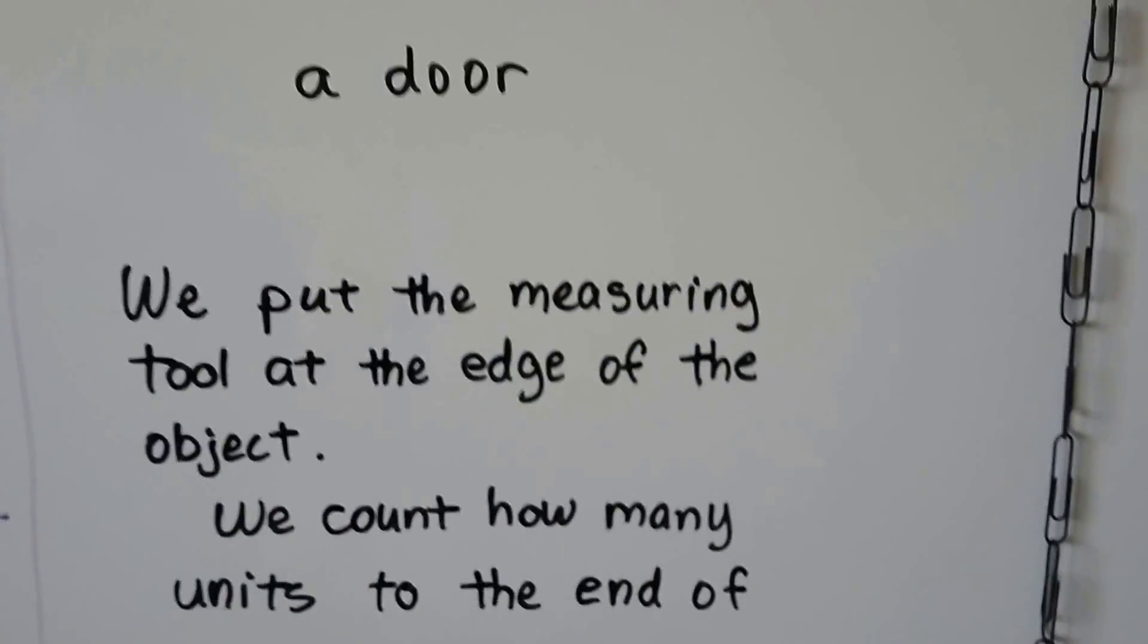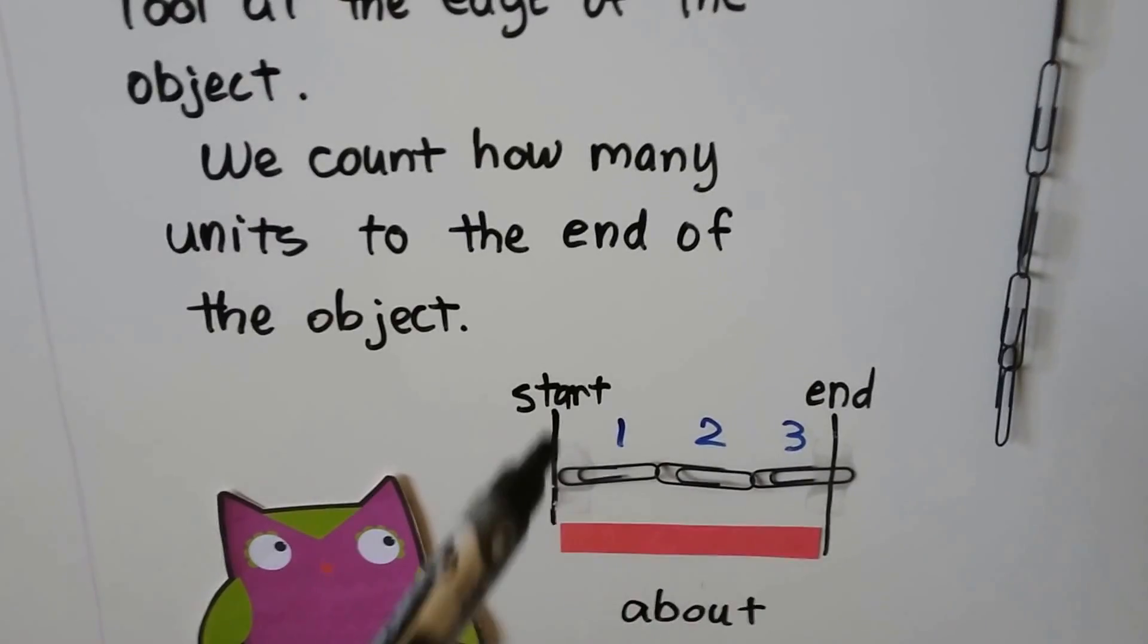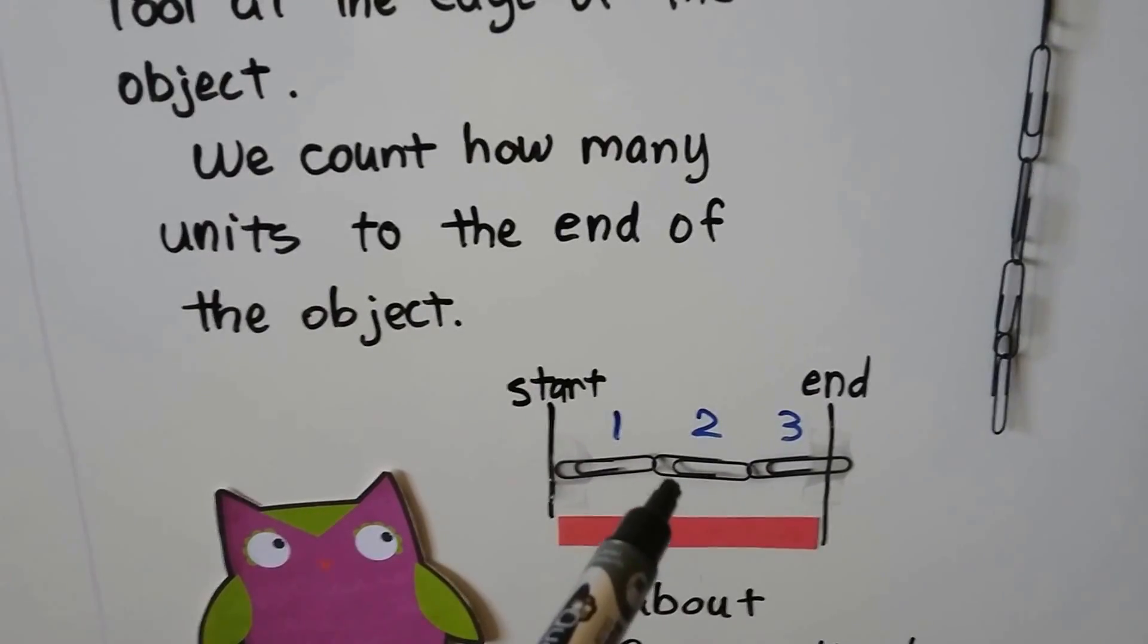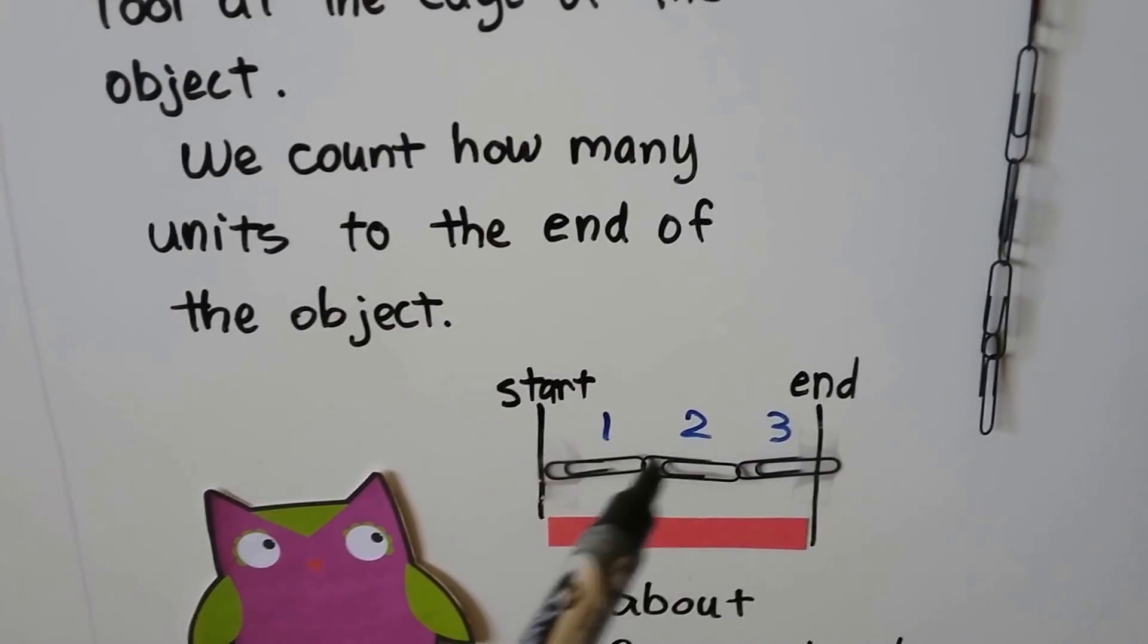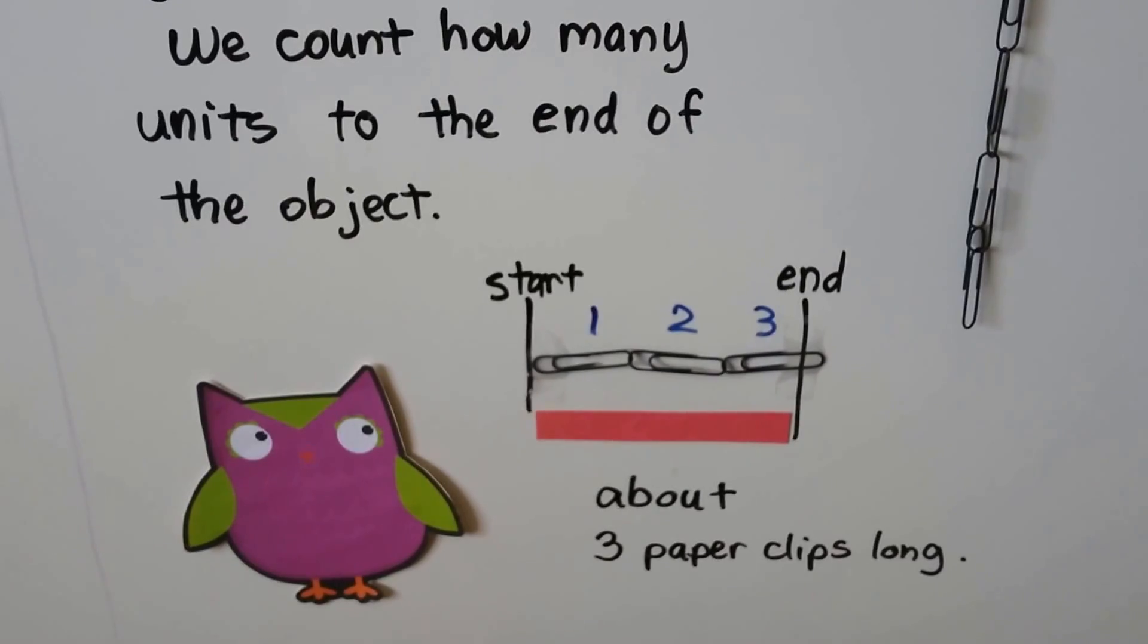We put the measuring tool at the edge of the object, right at the start. We count how many units to the end of the object. One, two, three. So that red bar is about three paper clips long.